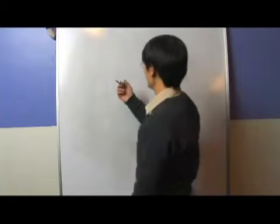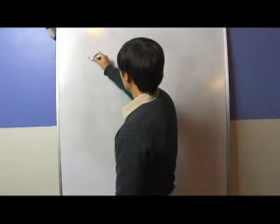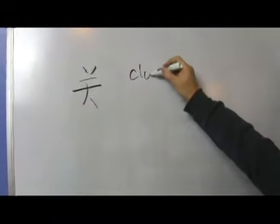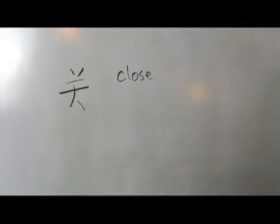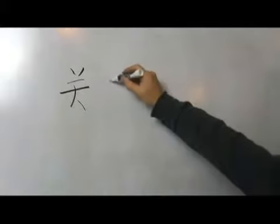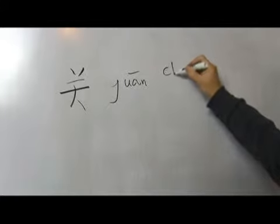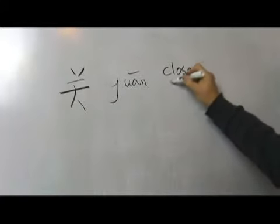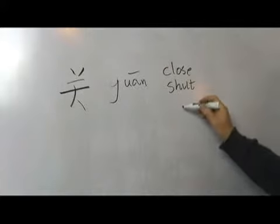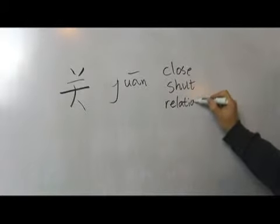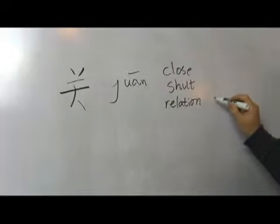The next character is 关 (guān), that means clothes, or shut. 关 — clothes, shut, relationship, and past.